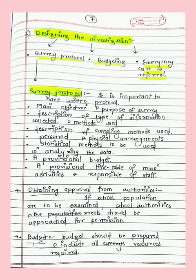The protocol also describes the sampling methods, statistical methods, budget, resources required, and a timetable of activities for when and how data will be collected. The next step is obtaining approval from authorities — for example, if you want to collect data from a school, you have to take permission or informed consent from parents or school authorities.